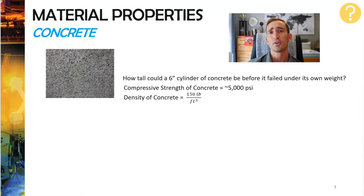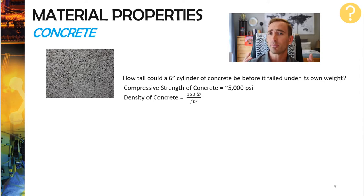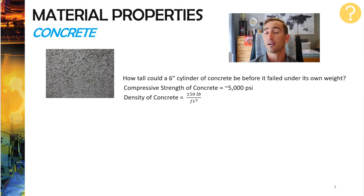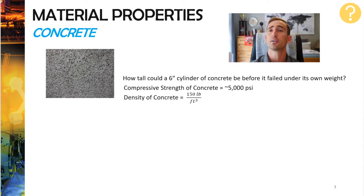Let's start off with another example problem about my favorite material, concrete. Let's look at how tall a 6-inch cylinder of concrete could be before it failed under its own weight. We know that the compressive strength of concrete from our previous lecture is 5000 psi, and the density of concrete is 150 pounds per cubic foot. Take a minute and work this problem out.